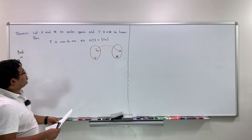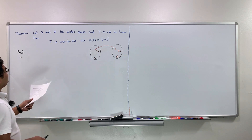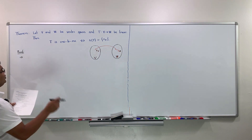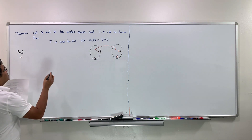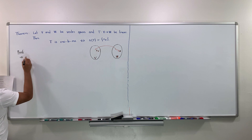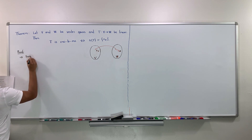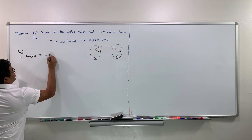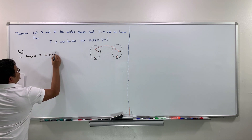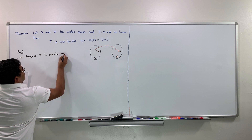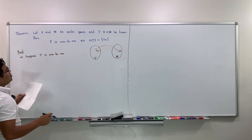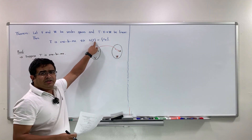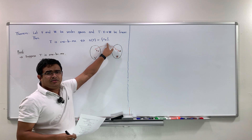To prove this, we need to prove both directions. So suppose T is one-to-one, and we want to prove that the null space of T contains only the zero vector.